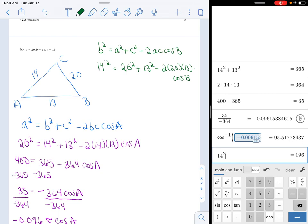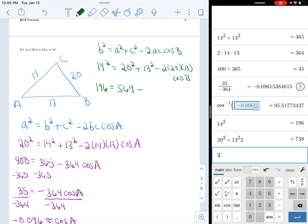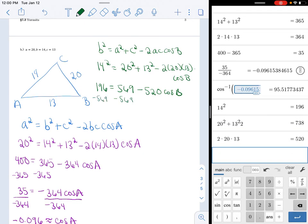My C is 13 squared minus 2 times 20 times 13, 520 cosine B. Okay, well, 14 squared equals 196 equals 20 squared plus 13 squared, 569 minus 2 times 20 times 13, 520 cosine B. Again, they're not like terms, so I'm going to take away 569 on both sides. So 196 minus 569 is going to be negative 373 equals negative 520 cosine B.